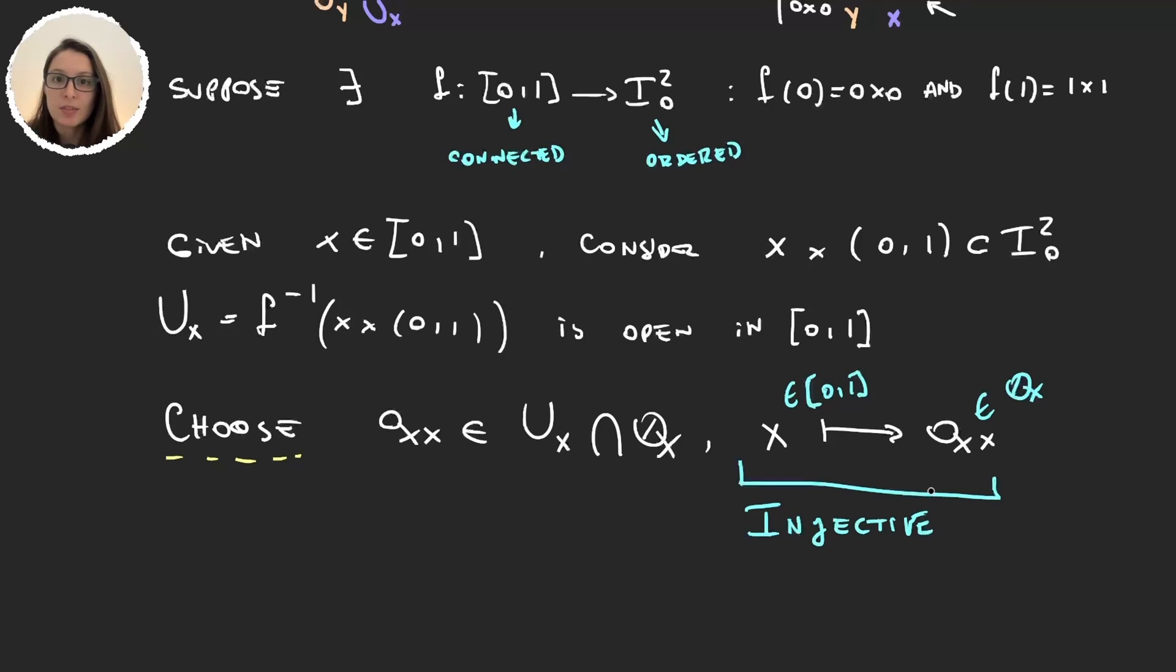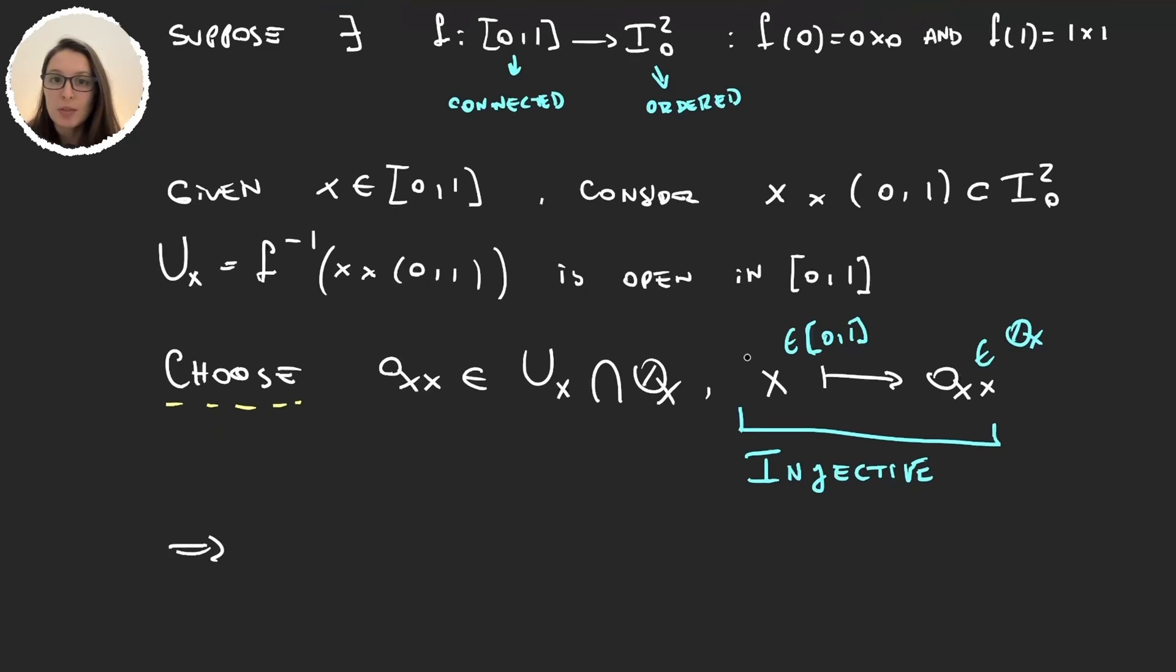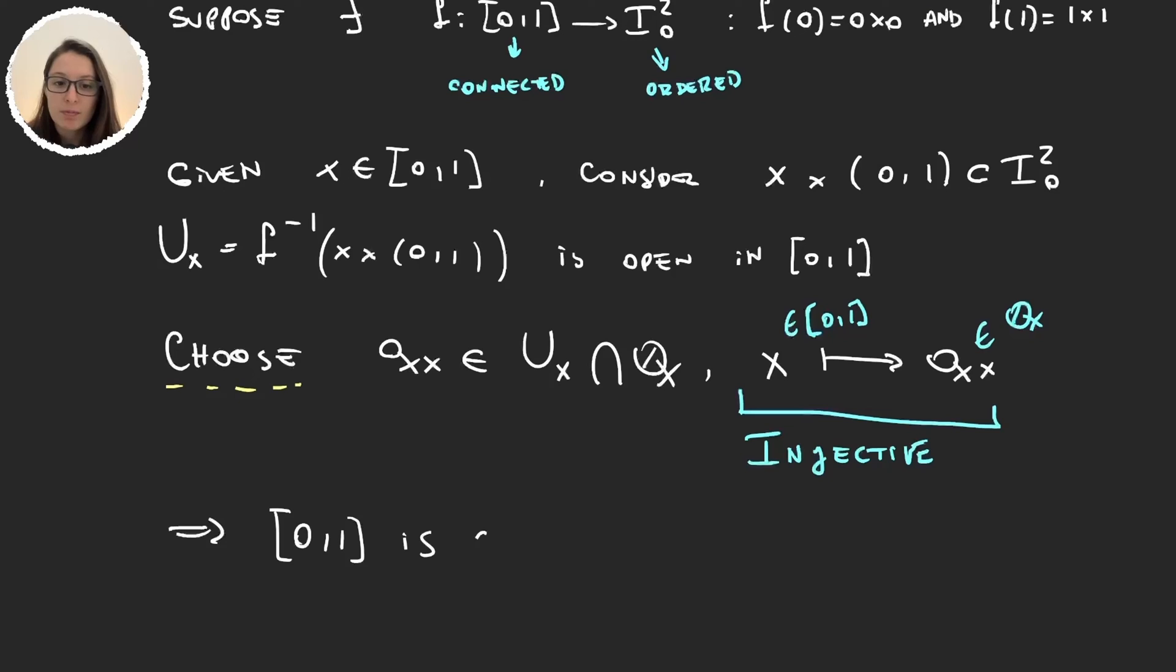Well and this is our contradiction right here because now from this we have that [0,1] has to be countable because we found an injective mapping between [0,1] onto the rational numbers and this is a contradiction.